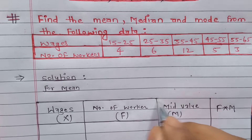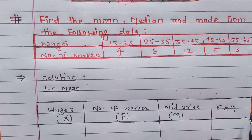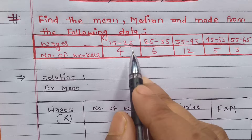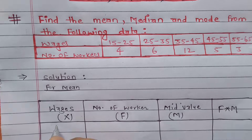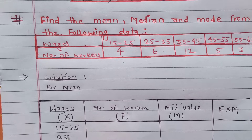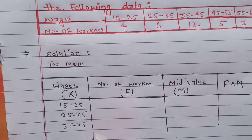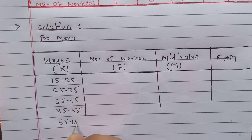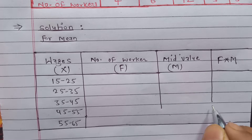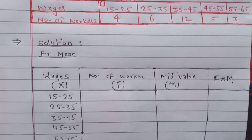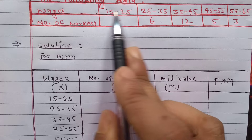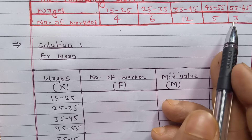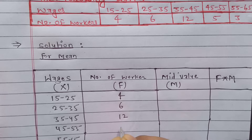At last we have a column for F×M. The wages intervals are: 15 to 25, 25 to 35, 35 to 45, 45 to 55, and 55 to 65. We write these in the wages column. The number of workers is 4, 6, 12, 5, and 3 — we write these in the frequency column.